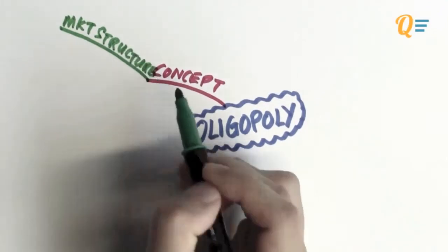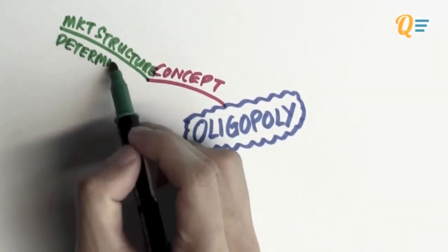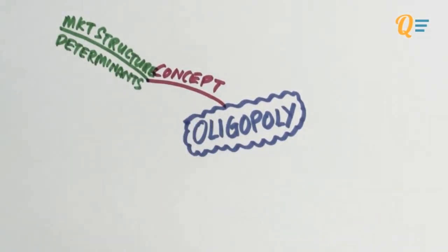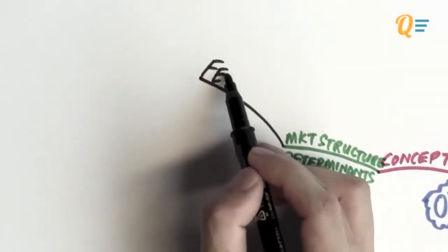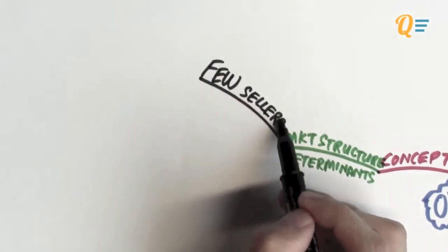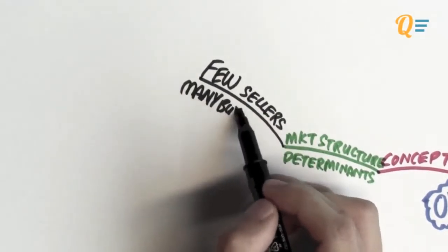The first thing that we always do is to talk about what are the determinants of this particular market structure. The first determinant is the number of agents in this market. So there are going to be a few sellers serving many, many buyers in the market.